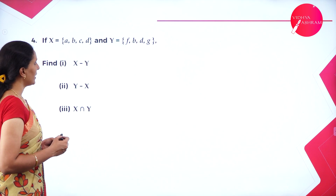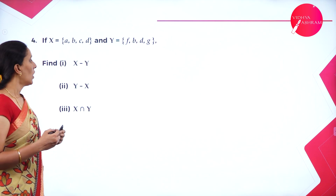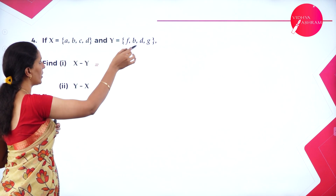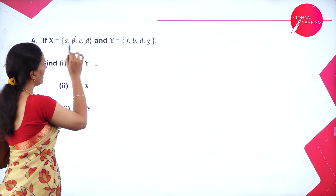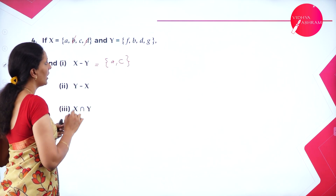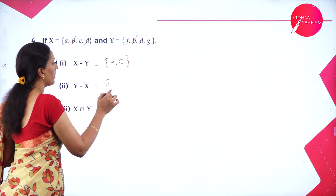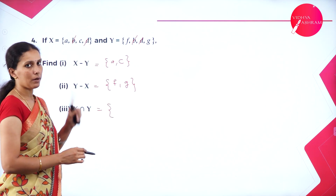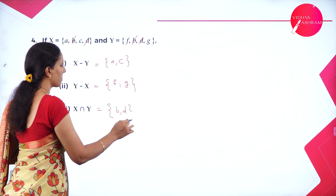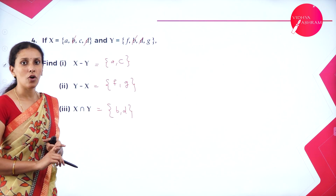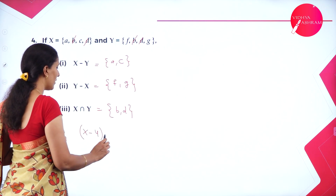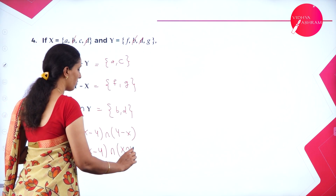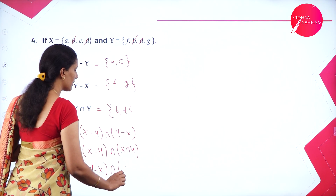Next, let X equal {A, B, C, D} and Y equal {F, B, D, G}. Find X minus Y, Y minus X, and X intersection Y. X minus Y means only in X not in Y — removing common elements B and D, we get A and C. Y minus X: removing B and D, we get only F and G. X intersection Y gives the common elements B and D. Notice none of the result sets share common elements — all three are disjoint.